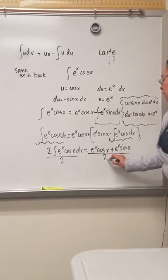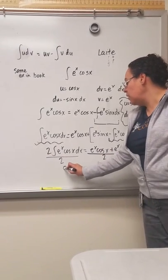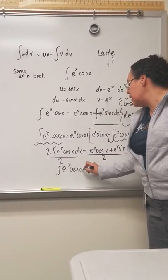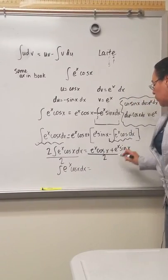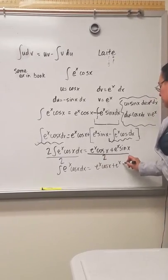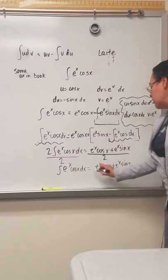And then we would divide both sides by two and we're almost done. So my answer would be the integral of e to the x cosine of x dx is equal to this whole thing plus our constant c.